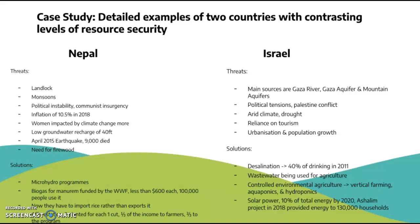Case study — Nepal vs. Israel, two countries with contrasting levels of resource security. Threats in Nepal: it is landlocked, subject to monsoons, and has faced political instability including a communist insurgency. Inflation was 10.5% in 2018. Women are impacted by climate change more than men due to their societal and agricultural roles. Low groundwater recharge of just 40 feet means sources drain quickly. In 2015, an earthquake killed 9,000 people.